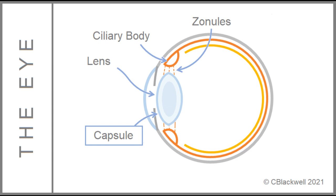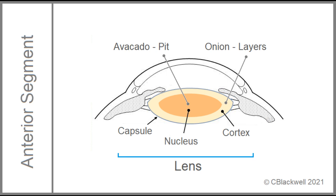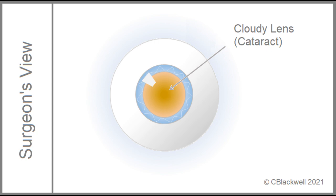Structurally, the lens has different layers. Important for us is the outer skin layer called the capsule. At surgery, you want to remove the substance of the lens but preserve the capsule in place as the envelope that is going to hold the implant. Picture an imaginary avocado-onion: the nucleus is hard like the avocado pit, the surrounding cortex is in layers like the outside of an onion, all enclosed by a thin skin layer. When the lens gets cloudy enough to be bothersome and it is time to remove it, that is when cataract surgery happens.